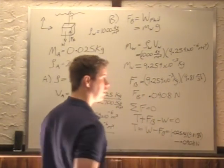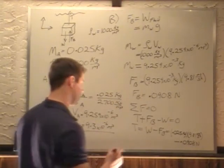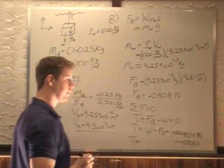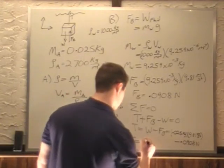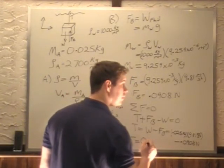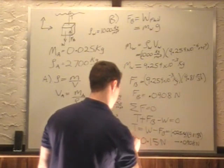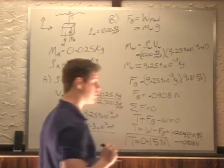If we multiply those two, subtract off 0.0908, we get a tension of 0.15 newtons. Final answer.